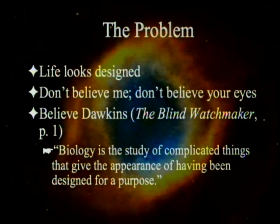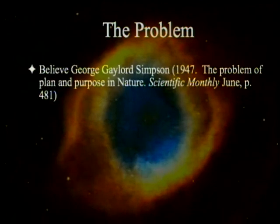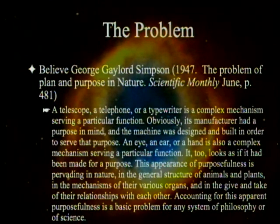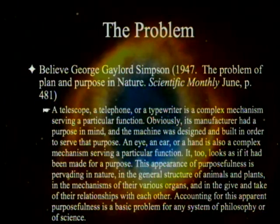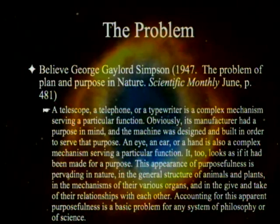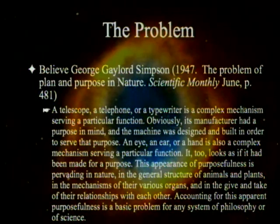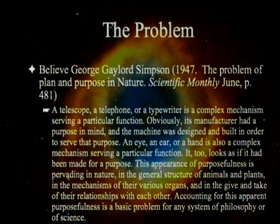Dawkins is not an outlier. George Gaylord Simpson in 1947: 'A telescope, a telephone, or a typewriter is a complex mechanism serving a particular function — obviously its manufacturer had a purpose in mind. An eye, an ear, or a hand is also a complex mechanism serving a particular function. It too looks as if it had been made for a purpose. This appearance of purposefulness is pervading in nature — in the general structure of animals and plants, in the mechanisms of their various organs, and in their relationships with each other. Accounting for this apparent purposefulness is a basic problem for any system of philosophy or of science.'